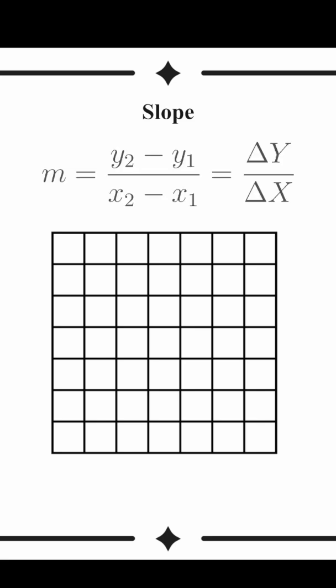Slope is easy to understand. Slope describes the change in y over the change in x. Sometimes it's called rise over run because we're comparing how the slope rises on the y-axis to how it runs across the x-axis.